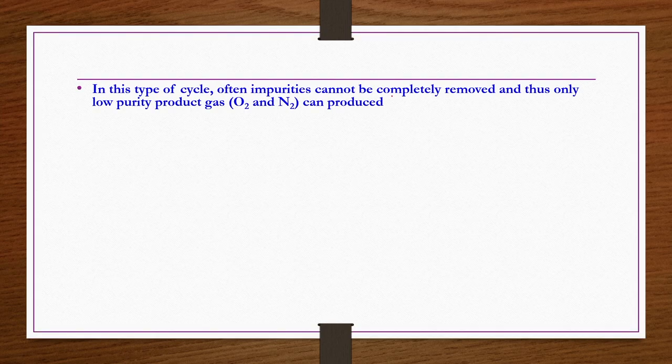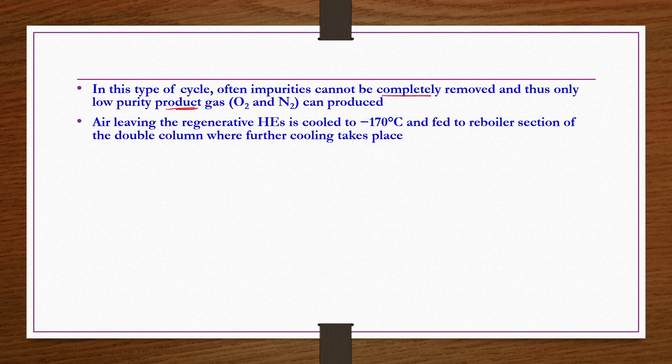In this type of cycle, impurities cannot be removed completely, so you can produce low purity product gas — O2, N2, or both. Air leaving the regenerative heat exchangers is cooled to minus 170 degrees centigrade and fed to the reboiler section of the double column where further cooling takes place. What is this double column? Two distillation columns, one mounted onto the other.